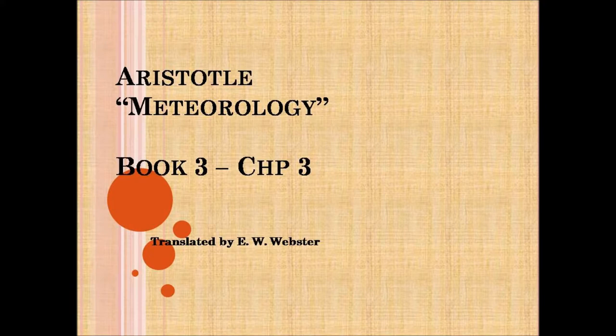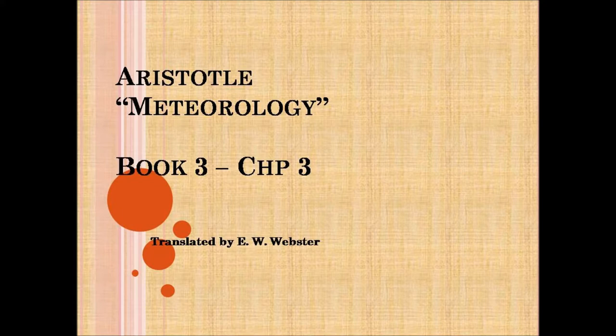So much for the atmospheric conditions under which the reflection takes place. The reflection is from the mist that forms around the sun or the moon, and that is why the halo is not seen opposite the sun like the rainbow. Since the reflection takes place in the same way from every point, the result is necessarily a circle or a segment of a circle. For if the lines start from the same point and end at the same point and are equal, the points where they form an angle will always lie on a circle.